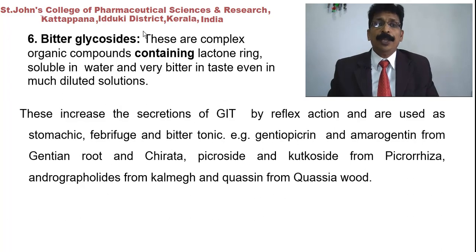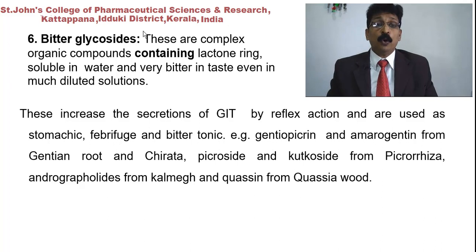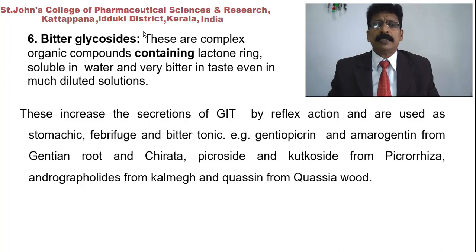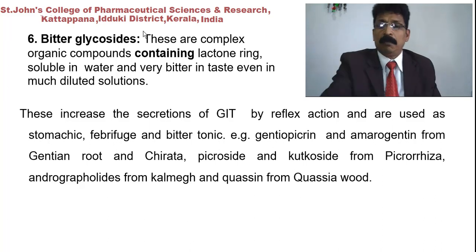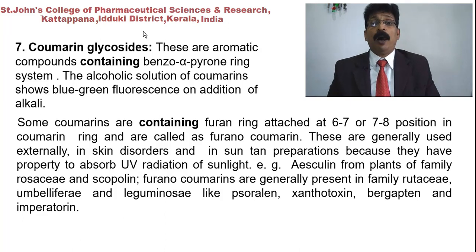Bitter glycosides are complex organic compounds containing a lactone ring, soluble in water, and very bitter in taste even in much dilute solutions. They increase the secretion of the GIT by reflex action and are used as stomachic, cholagogue, and bitter tonic. Examples: gentiopicrin and amarogentin from gentian root, chiratin and chirapicrins from chirata, picroside, andrographolides from calamus, and quassin from quassia.